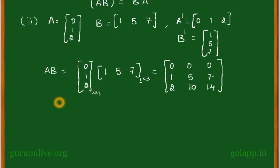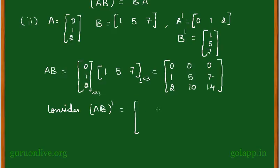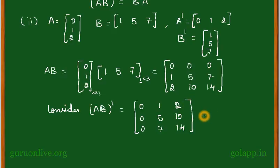Our LHS is (AB) whole transpose. So (AB) whole transpose is equal to [0, 1, 2], [0, 5, 10], [0, 7, 14]. This is the AB whole transpose, which is your LHS. Call this equation 3.